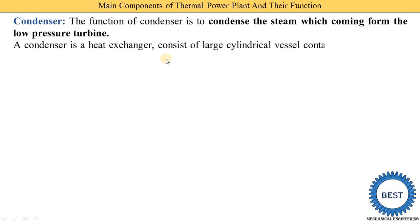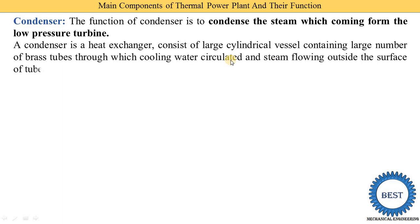The condenser is a heat exchanger consisting of a large cylindrical vessel with a number of brass tubes. Cooling water is circulated through these brass tubes, and the steam flows outside the surface of the tubes. The steam is thus condensed — converted into water.